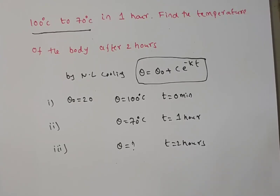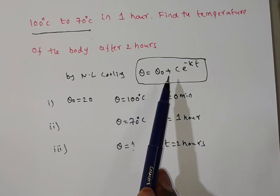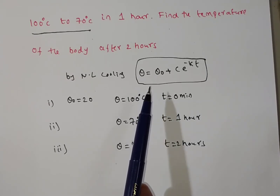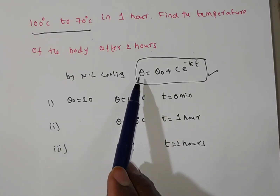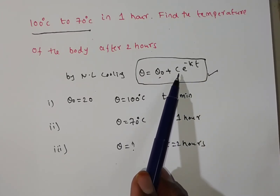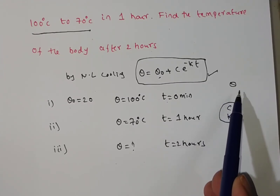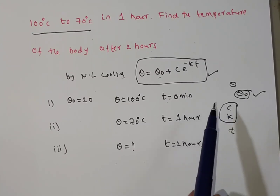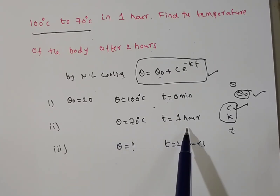Now, using Newton's law of cooling: theta equals theta naught plus C e to the power of minus KT. The unknowns here are C and K. Theta naught is fixed at 20. From the first given data, we can find the value of C. From the second given data, we can find the value of K.